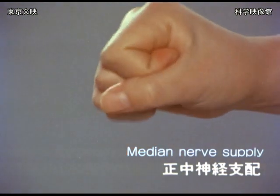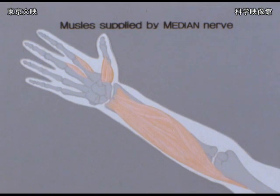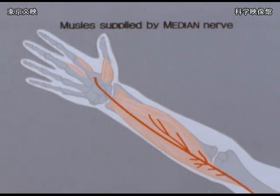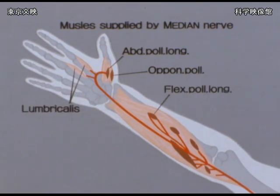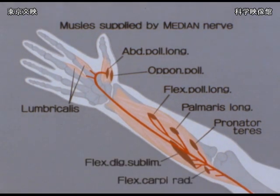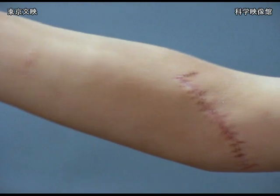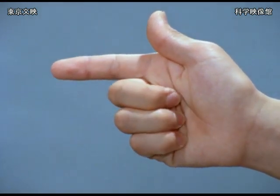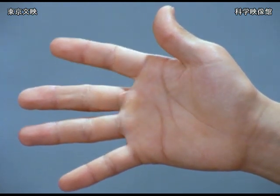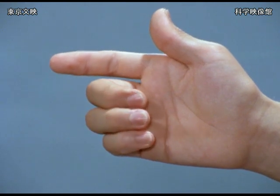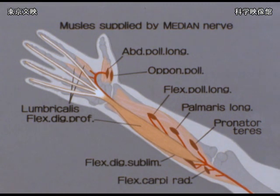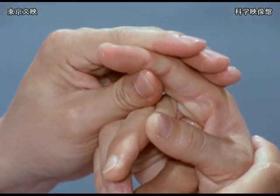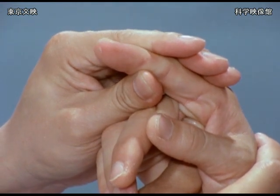Most of the finger flexors are innervated by the median nerve. In this patient, the median nerve has been completely divided at the elbow by trauma. The ulnar three fingers, however, can still be flexed. This is explained by the fact that the profundus muscles are innervated by both the median and the ulnar nerves, and that the ulnar nerve supplies the muscles going into the ulnar three fingers. High median nerve paralysis should be diagnosed by whether the thumb and the index finger can be flexed or not.